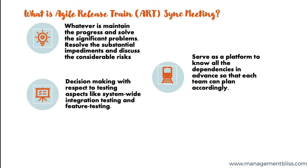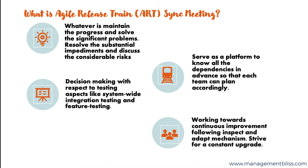ART meetings guide the teams to work towards continuous improvement following an inspect and adapt mechanism. Teams in these meetings strive for constant upgrade. Apart from resolving dependencies and planning around main events, these Release Train meetings allow each team to visualize the larger end product and bigger picture of the organization's goals.